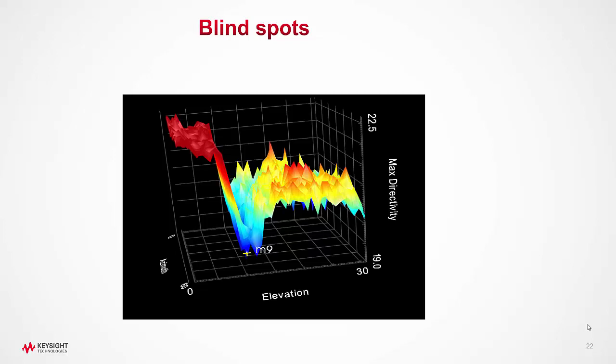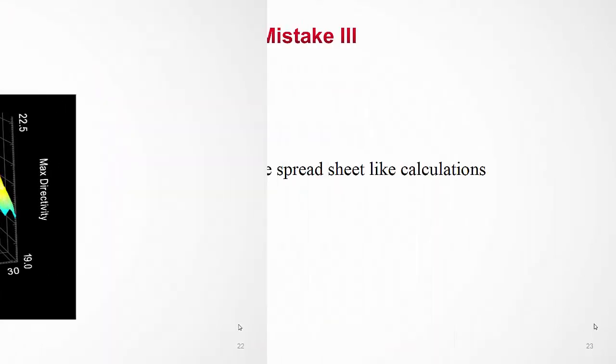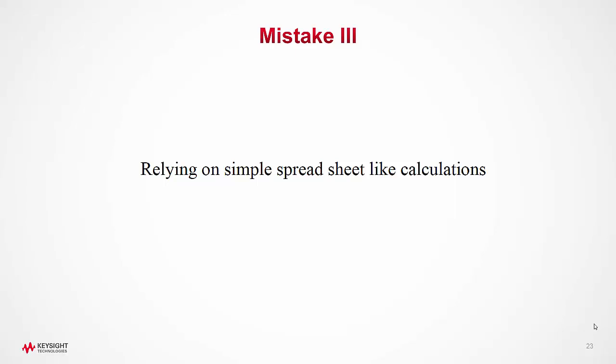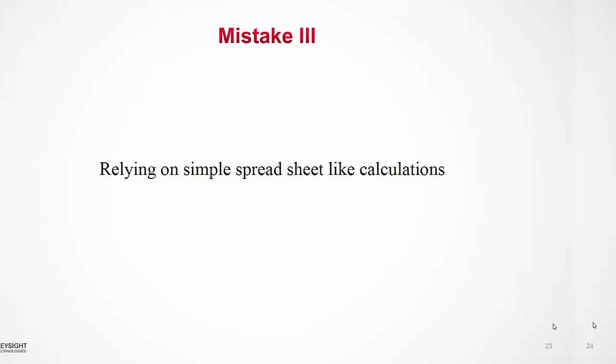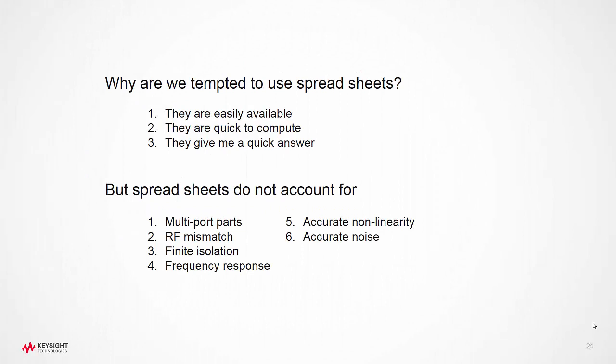A typical simulation shows a mild form of loss of directivity shown in the figure. Mistake number three: Relying on simple spreadsheet-like calculations. It's very popular to use spreadsheets to design RF systems. Spreadsheets are attractive to the RF system designers since they are readily available and quick to simulate.